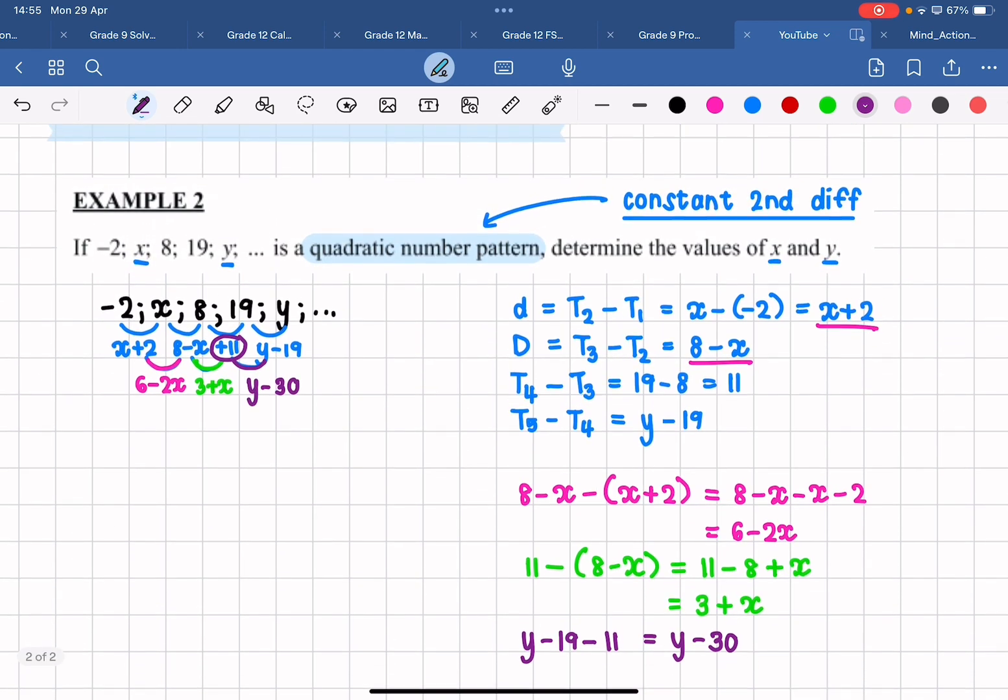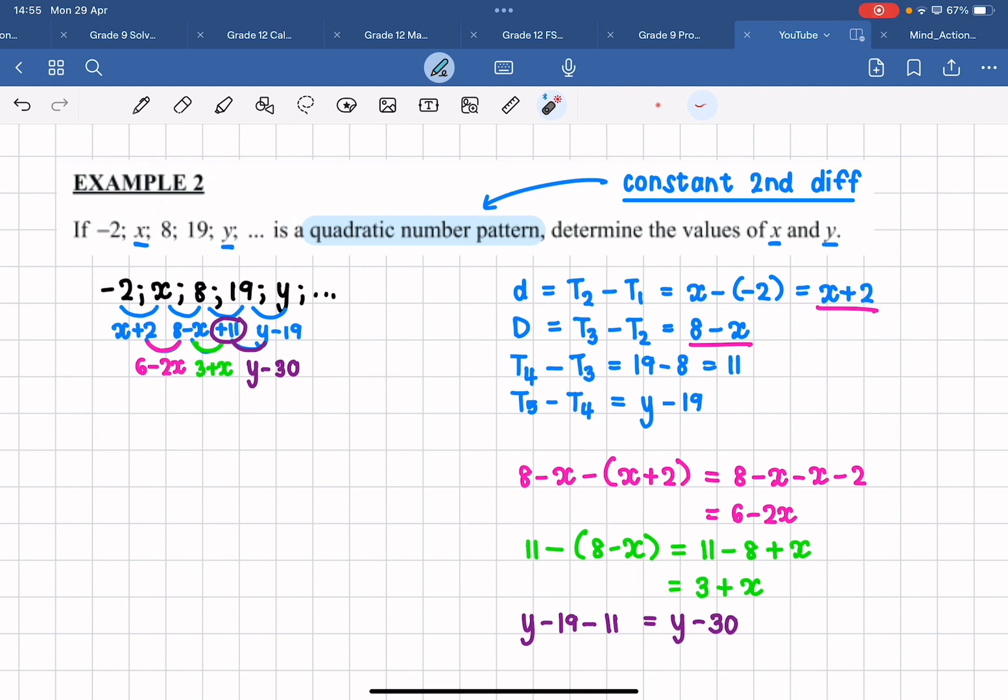Now remember, what did we say earlier? The classifying property of a quadratic number pattern is that it has a constant second difference, which means that these three second differences that we've calculated have to be equal to each other. So I'm going to say that 6 minus 2x is equal to 3 plus x, and this will now allow me to solve for x.